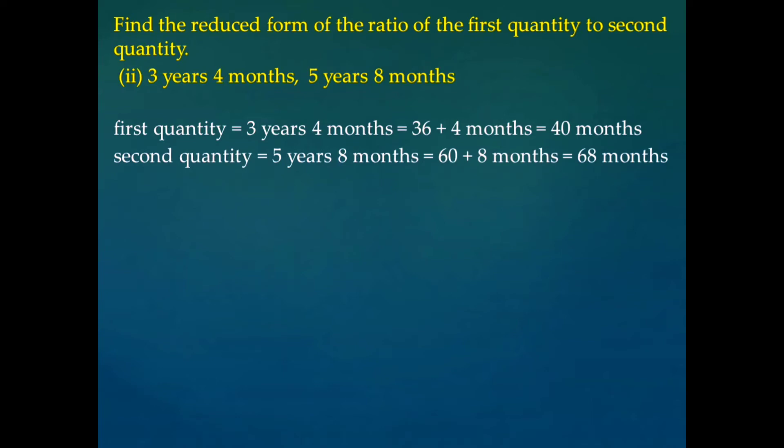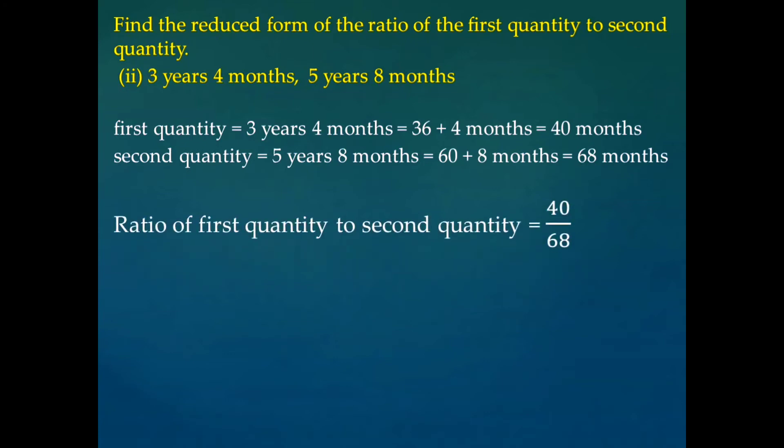Similarly, for the second quantity, 5 years and 8 months are there. That is converted into 60 months plus 8, that is 68 months. Now as both quantities are in the same units, that is months, we can find their ratio.